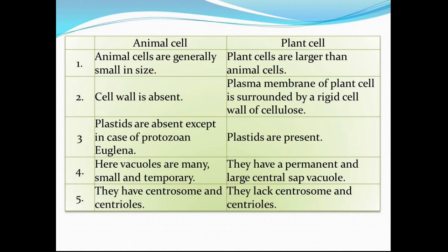Now, coming on to the differences between animal cell and the plant cell. Animal cells are generally small in size whereas plant cells are larger. In animal cells, cell wall is absent, whereas in plant cells, cell wall is present outside the plasma membrane — the plasma membrane of a plant cell is surrounded by a rigid cell wall of cellulose. Plastids are generally absent in animal cells whereas plastids are present in plant cells. In animal cells, vacuoles are many, small, and temporary, whereas in plant cells they have a permanent and large central sap vacuole. Animal cells have centrosome and centriole, whereas plant cells lack centrosome and centriole.